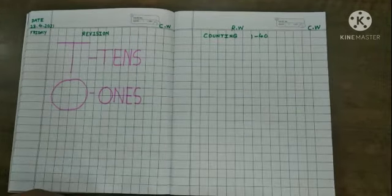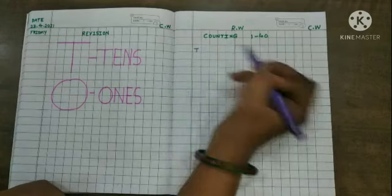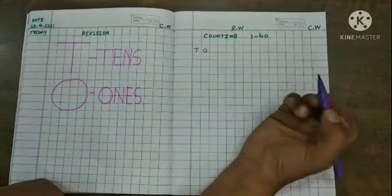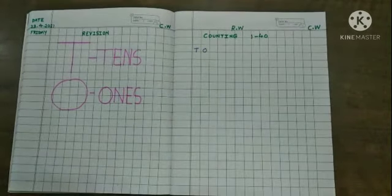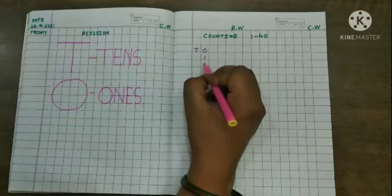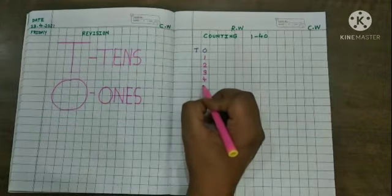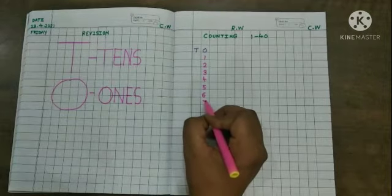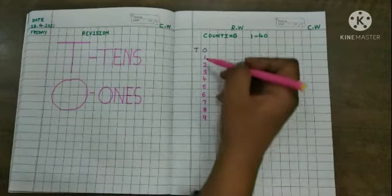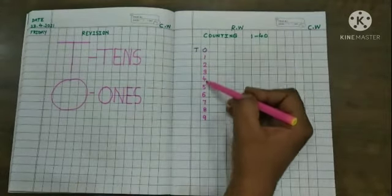Now students, before writing the counting, we need to mention tens or ones. T for tens, O for ones. Now we write counting here: 1, 2, 3, 4, 5, 6, 7, 8, 9. Look here students, the counting from 1 to 9, it has only one digit. That's why we have written this in ones column.